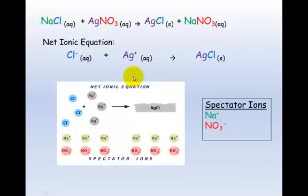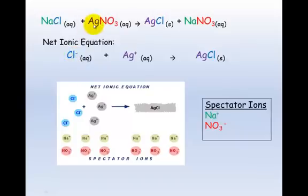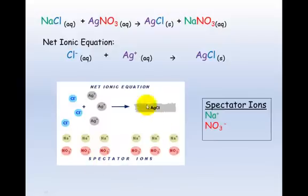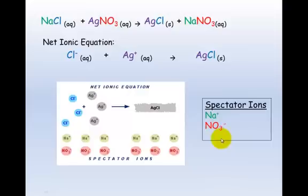Looking at the net ionic equation: chloride plus silver makes silver chloride. Our spectator ions are sodium and nitrate - they sit on the sidelines and do nothing. Sodium is aqueous in the reactants and aqueous in the products, so it's a spectator ion. Chloride is aqueous but becomes solid, so it forms part of the net ionic equation. Silver is aqueous and its product is solid, so it forms the other part. Nitrate is aqueous on both sides, making it the other spectator ion.